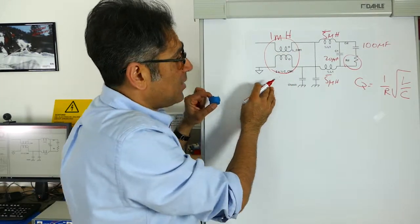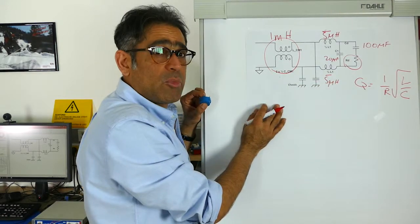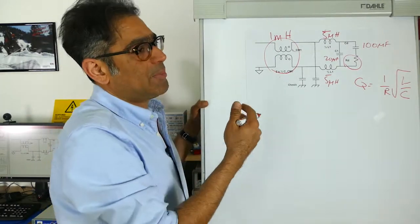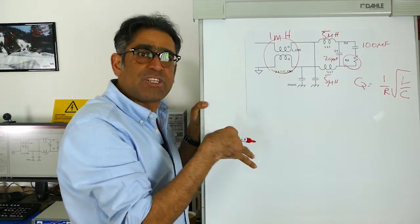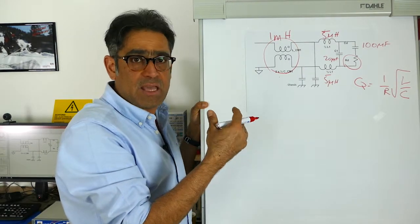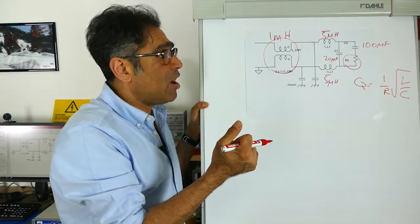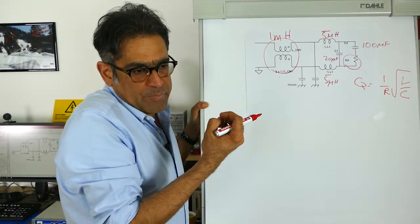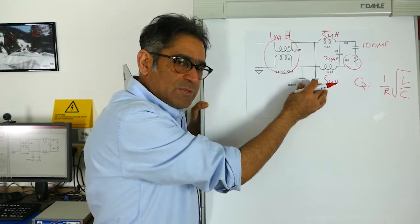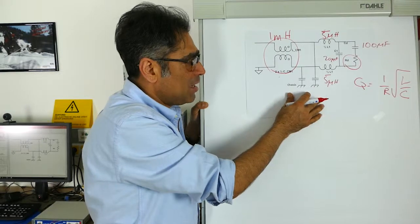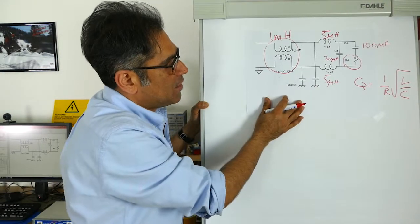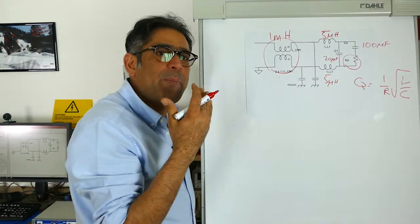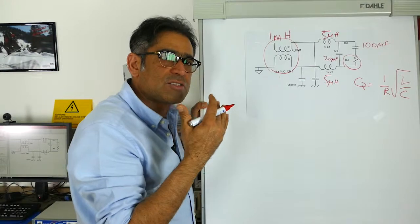The final thing I have to do is calculate the values of the common mode capacitors. There are two methods depending on whether you are making a line filter which is AC, or whether you're making a high power DC-DC filter. For a DC-DC filter you can typically have a bigger amount of capacitance to chassis than AC. For a DC-DC converter, the common mode noise starts to appear from about 5 to 7.5 megahertz and above.